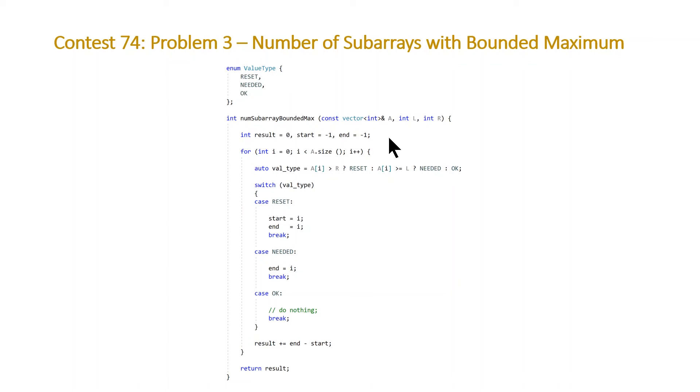At the top, we're going to initialize our result, which is what we're going to return from this function and our start and end integers, both to negative one. Result gets initialized to zero, then we enter our for loop.